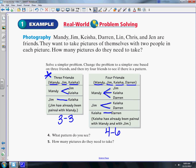It wants you to look at what patterns you see and how many pictures they need to take. Now for Mandy, Jim, Keisha, Darren, Lynn, Chris, and Jen, that's seven people.